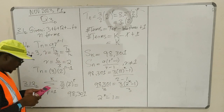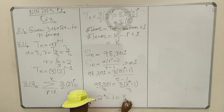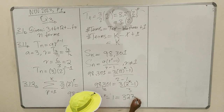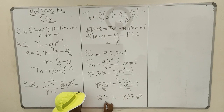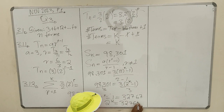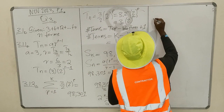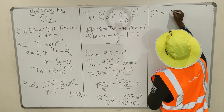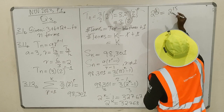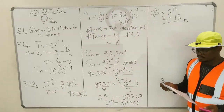98,301 divided by 3 gives 32,767. Transposing the 1 to the other side, 2^K equals 32,768. Finding the factors of 32,768, we get that 2^K equals 2^15. Therefore, since the bases are equal, K must also equal 15. The value of K is 15.